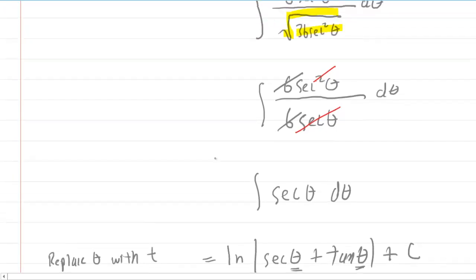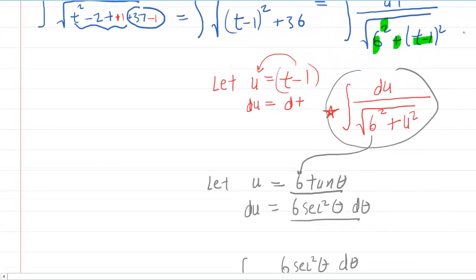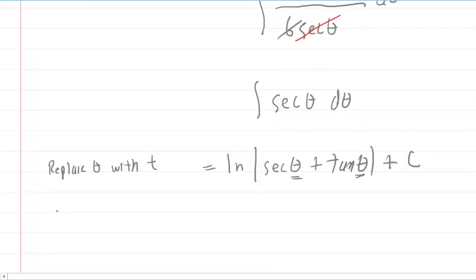We have to replace theta with t somehow. Now, if we scroll back, we recall that we had made a substitution right there, that u was equal to 6 tangent of theta. Let's talk about that for a moment. So we had said u is equal to 6 tangent of theta. Now, if you divide both sides of that by 6, you would have u divided by 6 is equal to tangent of theta. So this tangent of theta right here, we're going to end up replacing it with u divided by 6.